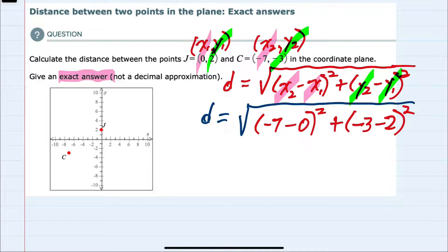Now that we have made all the substitutions, we can simplify working inside the parentheses first. Minus 7 minus 0 is minus 7 squared, plus negative 3 minus 2 is minus 5 squared.